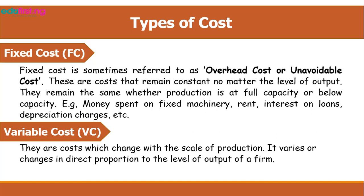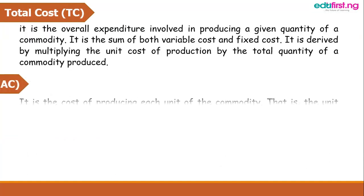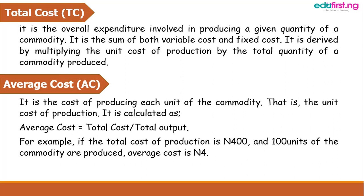Variable costs are costs that change with the scale of production — they vary or change in direct proportion to the level of output of a given firm. For example, if a firm producing cloth decides to increase the level of output, some costs will also follow suit. Costs like labor and capital, which increase as a result of the firm's decision to increase output, are the variable costs.